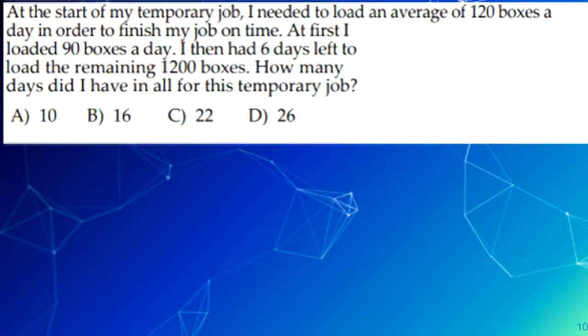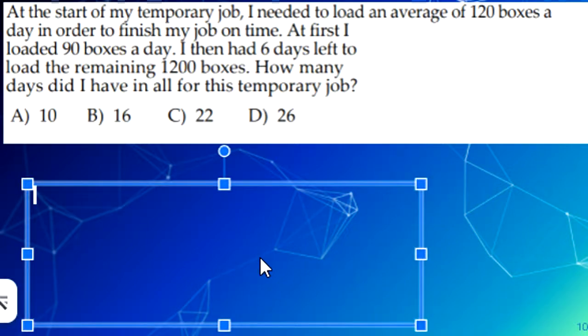Each day he would have loaded 90 boxes instead of 120, so it would be 30 boxes short. If it was on schedule, he would need to load 720 boxes in the last 6 days. So he would have to load 480 extra boxes, and since 480 divided by 30 is 16, he would have to do 16 plus 6, which is 22. So our answer would be C, 22 days to finish his temporary job.